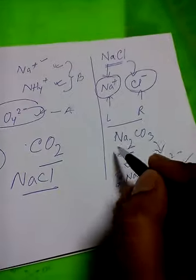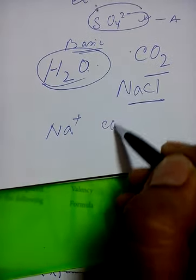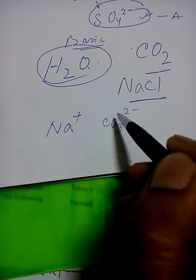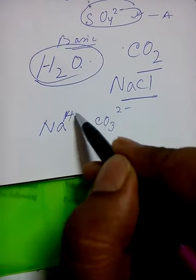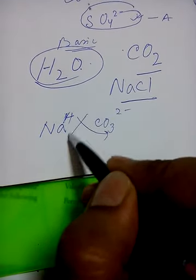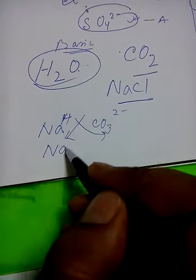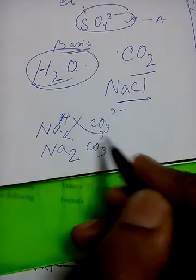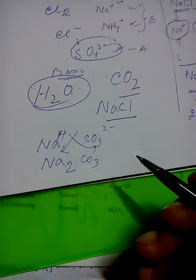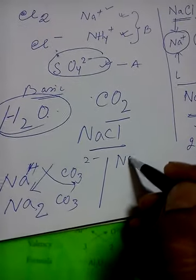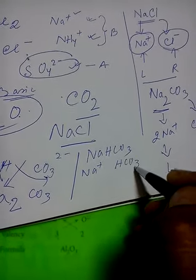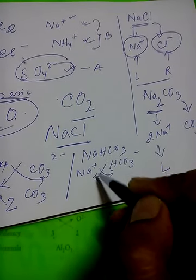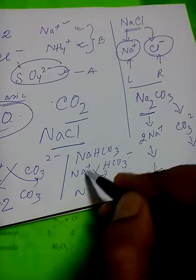For Na₂CO₃: Na⁺ has charge 1 and CO₃²⁻ has charge 2. Criss-crossing gives Na₂ and CO₃ — CO₃ is multiplied by 1, so it stays as CO₃. Similarly for sodium bicarbonate NaHCO₃: splitting gives Na⁺ and HCO₃⁻, criss-cross with one each — 1 and 1 as common factor — so the formula is NaHCO₃.